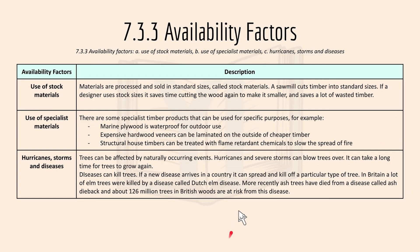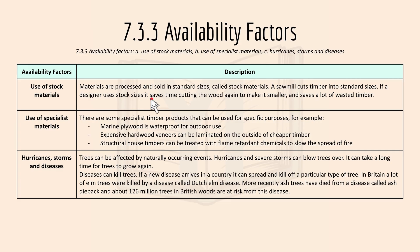Then we have 7.3.3 availability factors, which include the use of stock materials, specialist materials, and hurricanes, storms, and diseases. Materials are processed and sold in standard sizes called stock materials. A sawmill cuts timber into standard sizes, and if a designer uses stock sizes it saves time from cutting the wood again and reduces wasted timber.